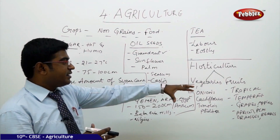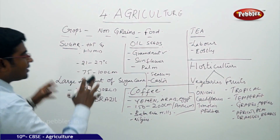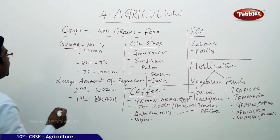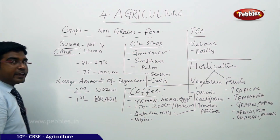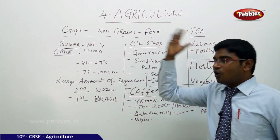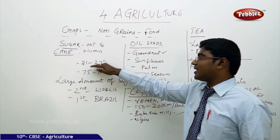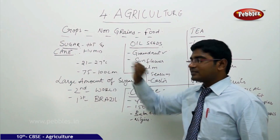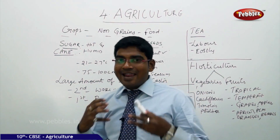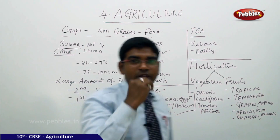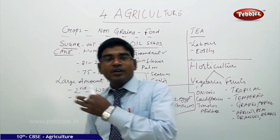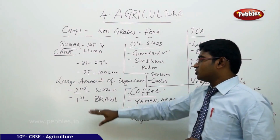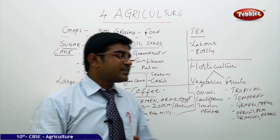To recap: the major non-grain food crops in India are, first, sugarcane — India stands second in production after Brazil. The conditions required are hot and humid climate, temperatures of 21 to 27 degrees Celsius, and rainfall of 75 to 100 centimeters per annum. Large amounts of manual labor are needed for both sowing and harvesting, which has been a major challenge, but India still maintains second position globally.